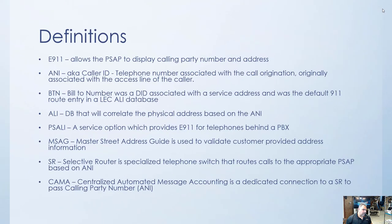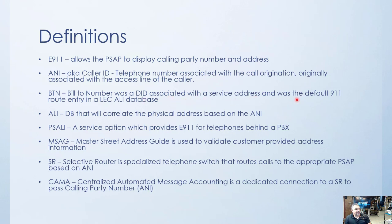First let's look at some definitions to make sure we're on the same page. E911 allows the PSAP to display the calling party number and an address — you want that call taker to know where you're at in case you can't give your address. ANI — when I say ANI, I mean caller ID. It's a little more technical than that, but I'll use those words interchangeably.